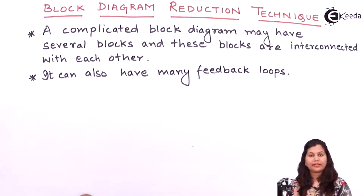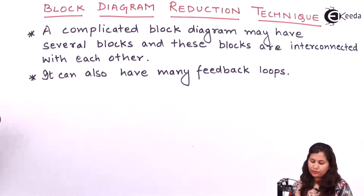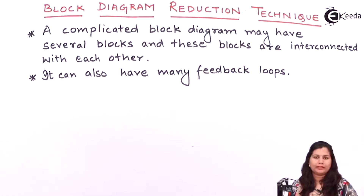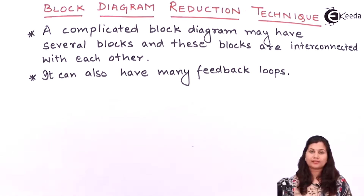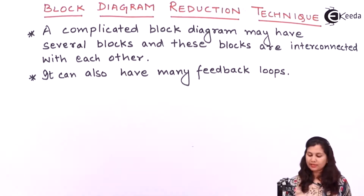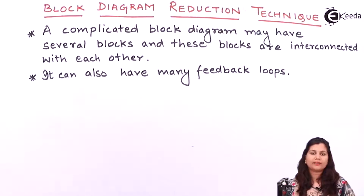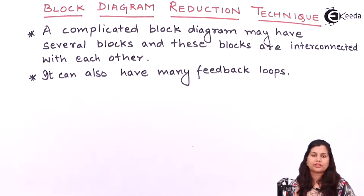A block diagram has many number of blocks and these blocks are interconnected with each other, and there are many feedback loops in a block diagram, so it becomes very complicated. In order to determine the transfer function of the overall system, we have to use a procedure to reduce these blocks. We rearrange these blocks using some rules, and this procedure is known as block diagram reduction technique.